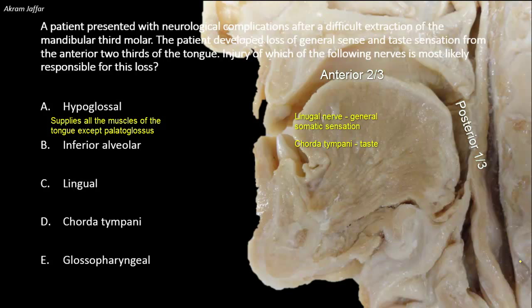The posterior third of the tongue develops from the third branchial arch and is therefore supplied by the nerve of the third arch — the glossopharyngeal nerve — both for general and taste sensation. In addition, the internal laryngeal branch of the vagus nerve, the tenth cranial nerve, also supplies a small area of the mucosa of the tongue just anterior to the epiglottis.